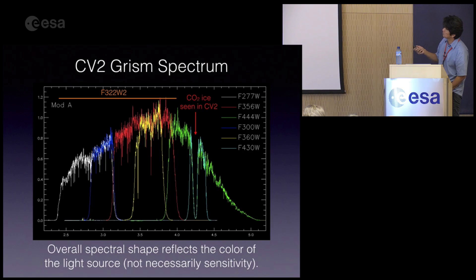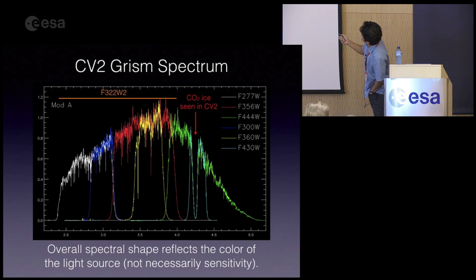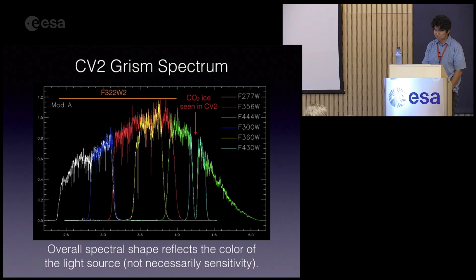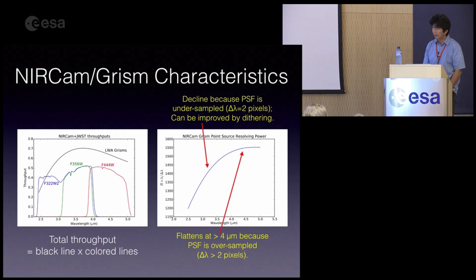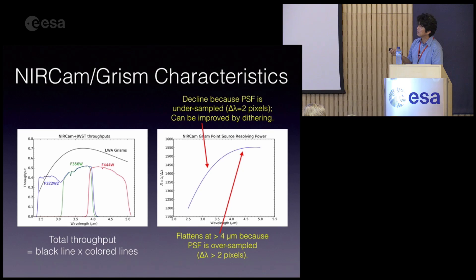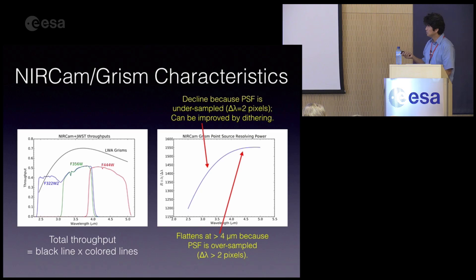There are a number of filters that could potentially be used. We can cover the whole range with the F322W2 and F444W filters. If you use narrow filters, it is easier to get full wavelength coverage from a larger number of sources. The grading efficiency and throughput with filter and other telescope optics are plotted; to get total throughput, multiply these two curves. The resolving power is also shown.